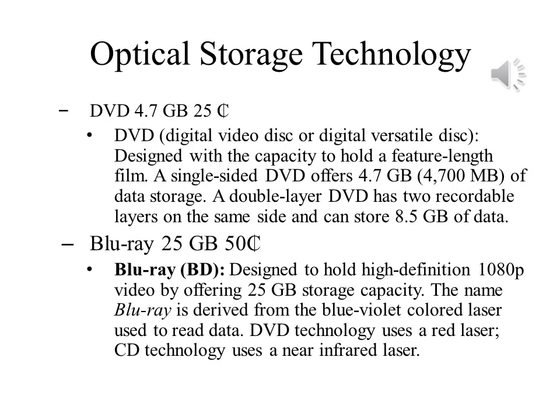DVDs have a data capacity of about 4.7 gigabytes. A double-sided DVD can hold 8.5 gigabytes. DVDs were developed specifically for recording full-length feature films, and this is why the capacity is so much larger than CDs. Blu-ray discs can store 25 gigabytes and need the extra capacity to store high-definition movies. Their capacities, and the age of these technologies, play a role in their cost.